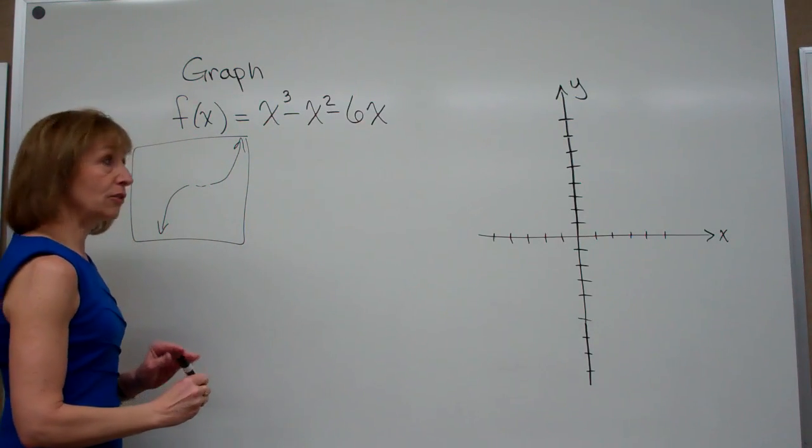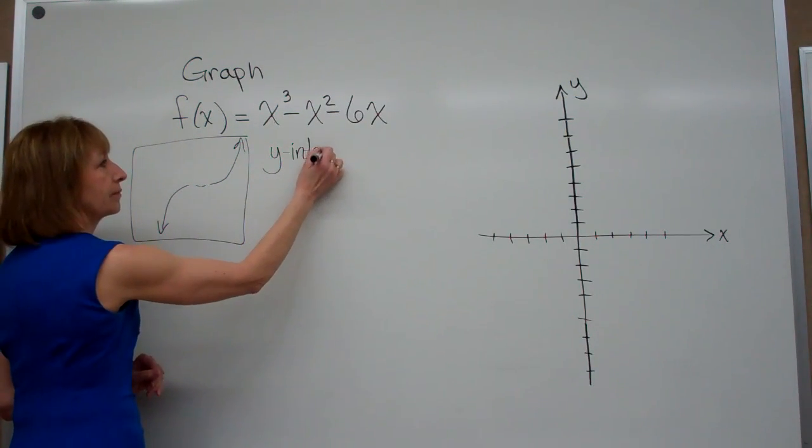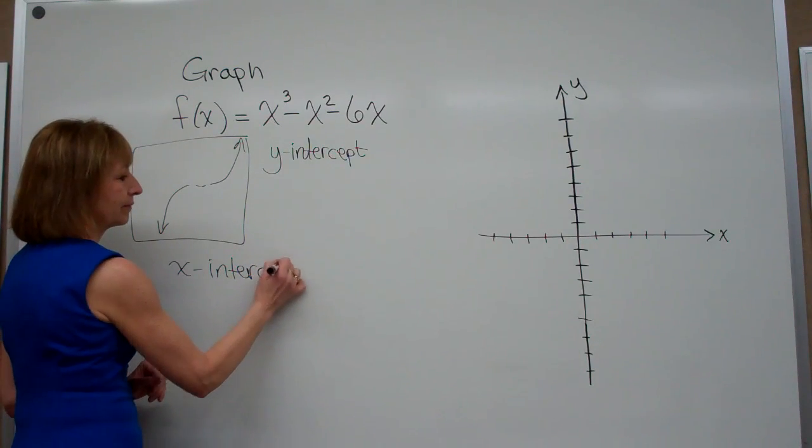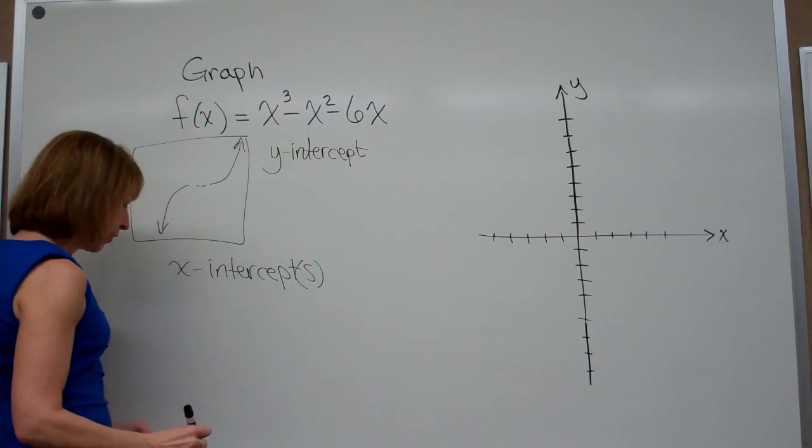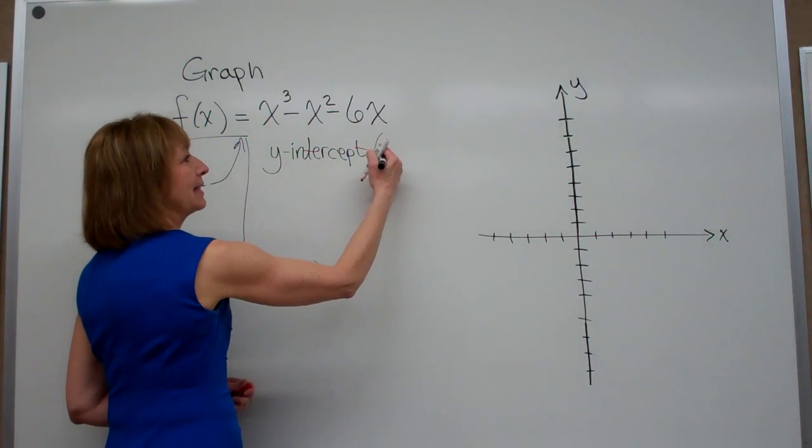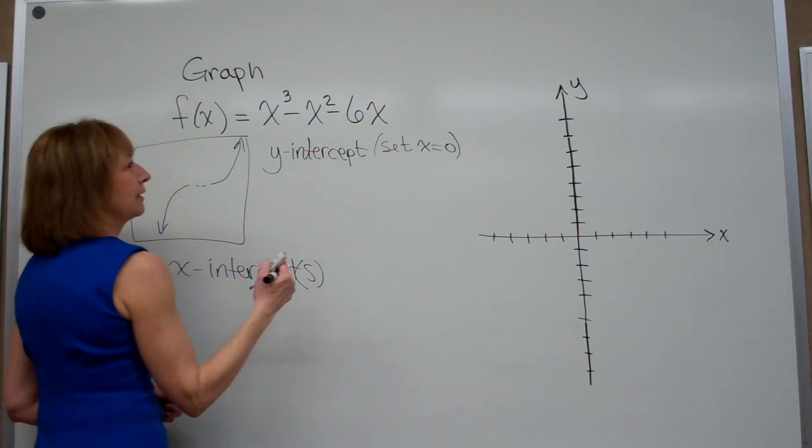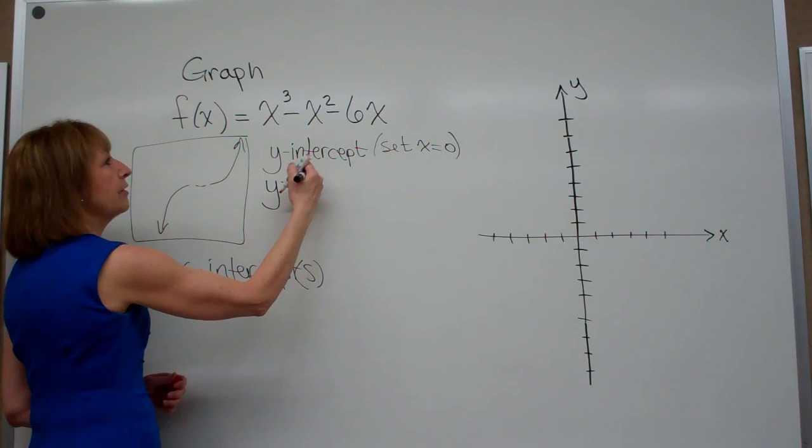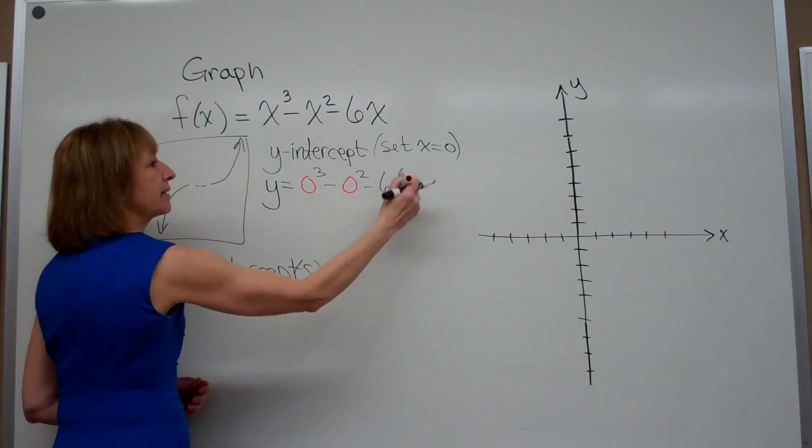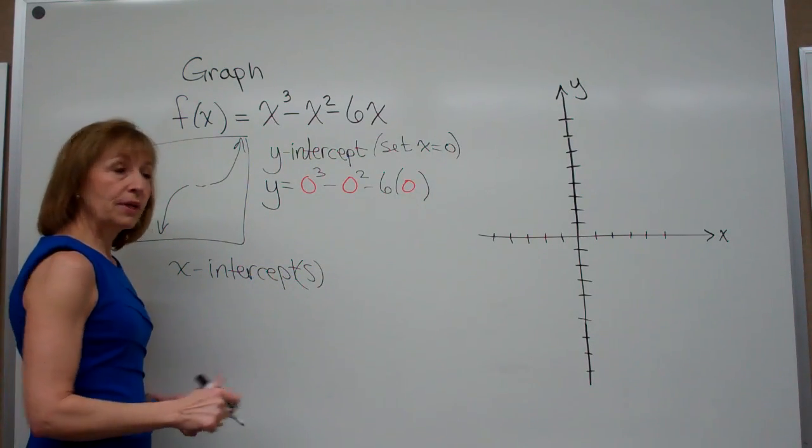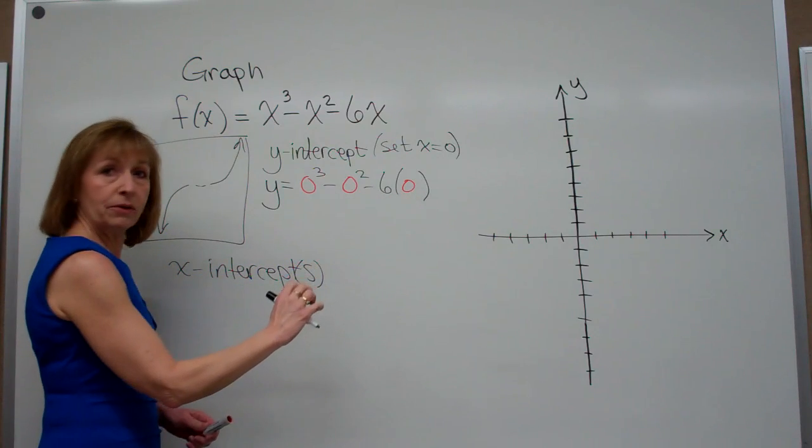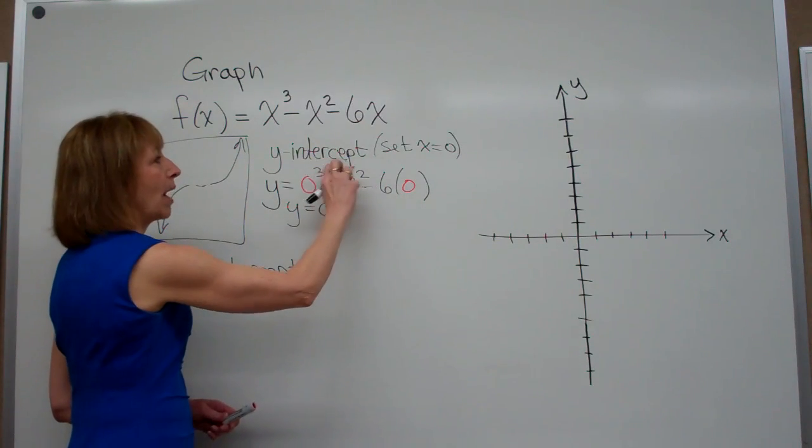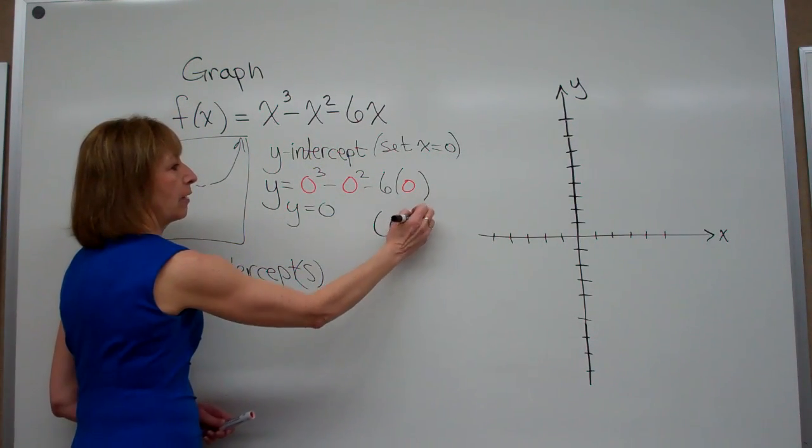Okay, so next let's look at finding our y-intercept and then our x-intercept. To find our y-intercept, we want to set x = 0. So we have our y, or our function value when x is 0, is 0³ - 0² - 6(0). So here, 0³ is 0, 0² is 0, then 6(0) is 0, so 0 - 0 - 0 = 0. So I have a y-intercept of (0, 0).